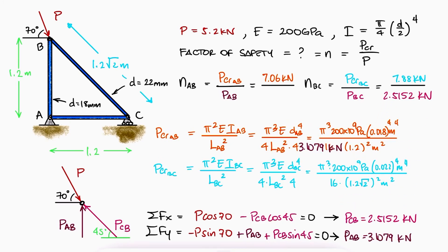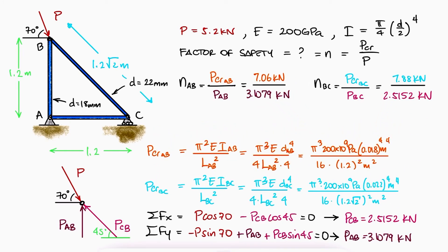Substituting the internal forces of AB and BC, we see that the smallest factor of safety and therefore the one that governs is 2.27.